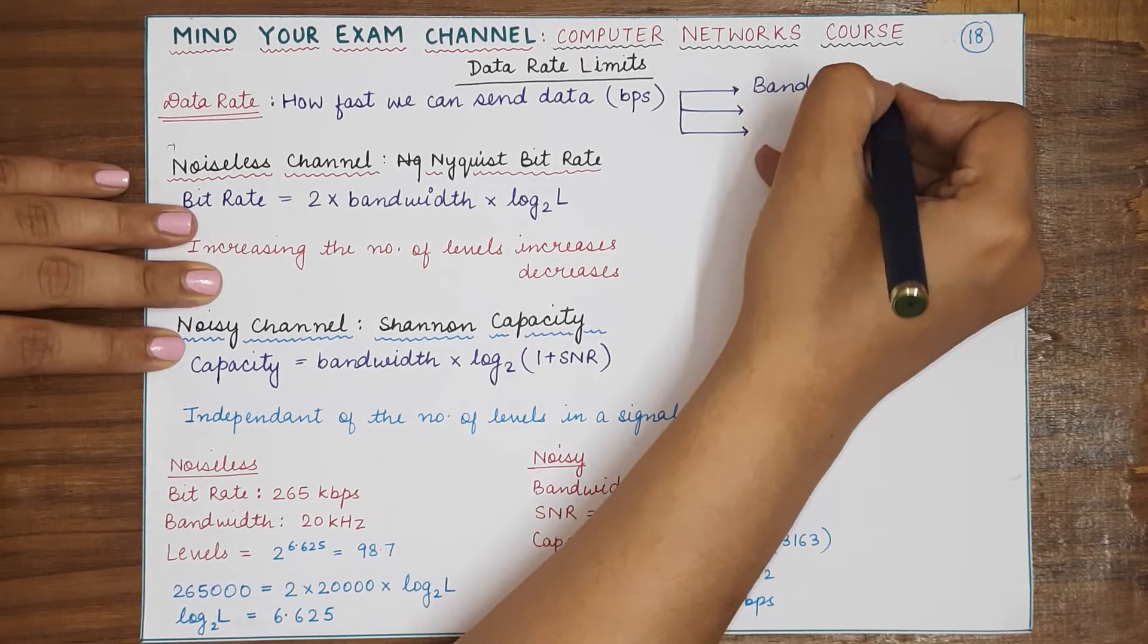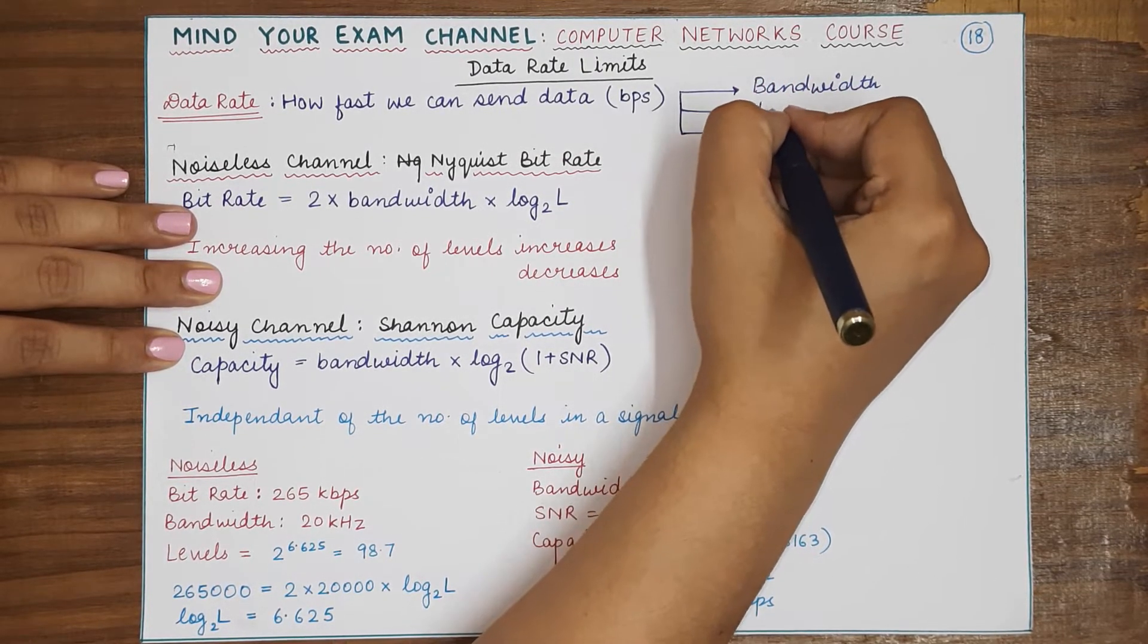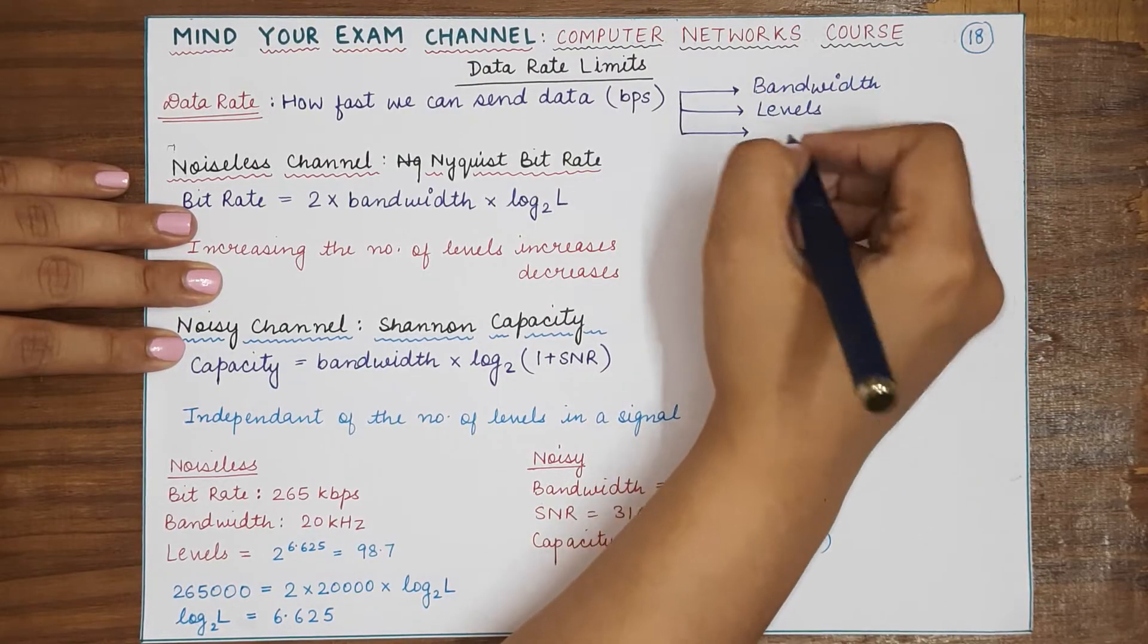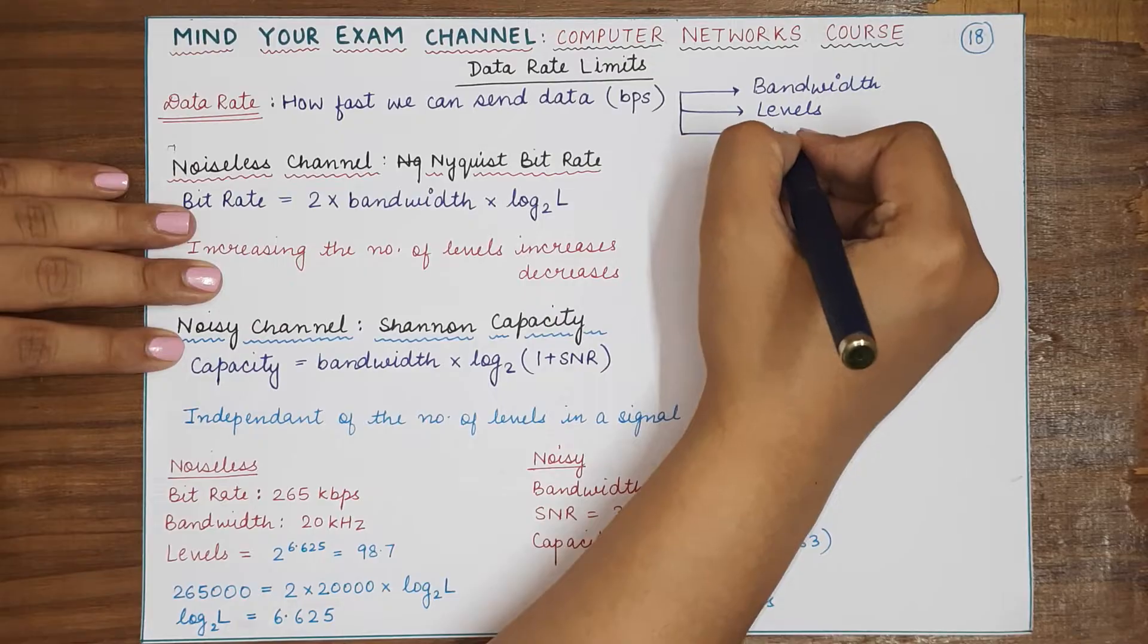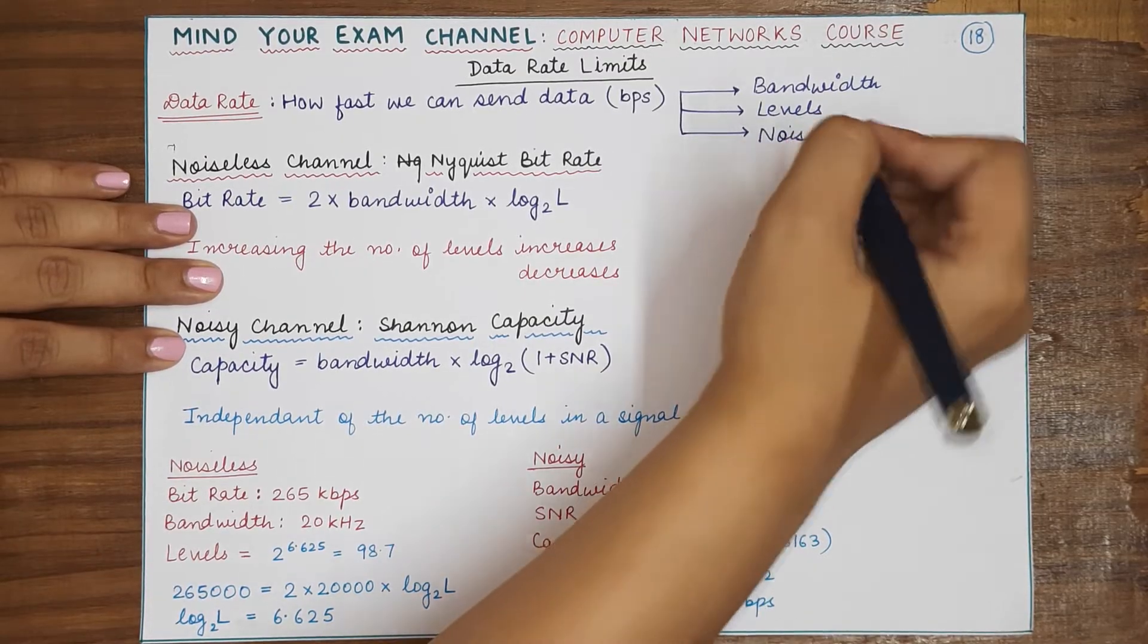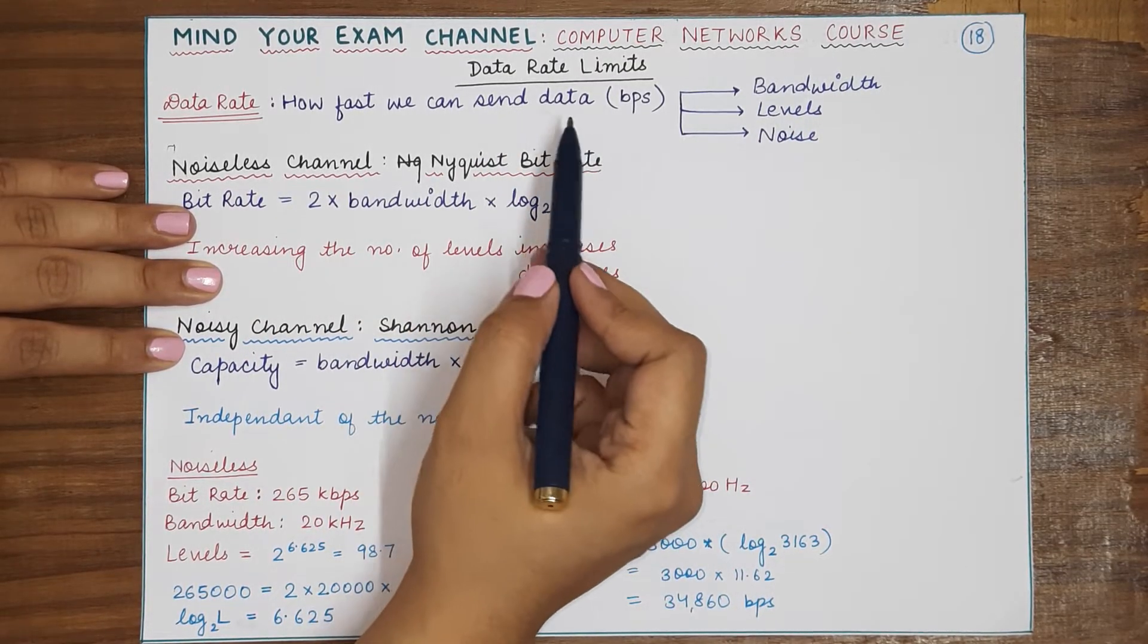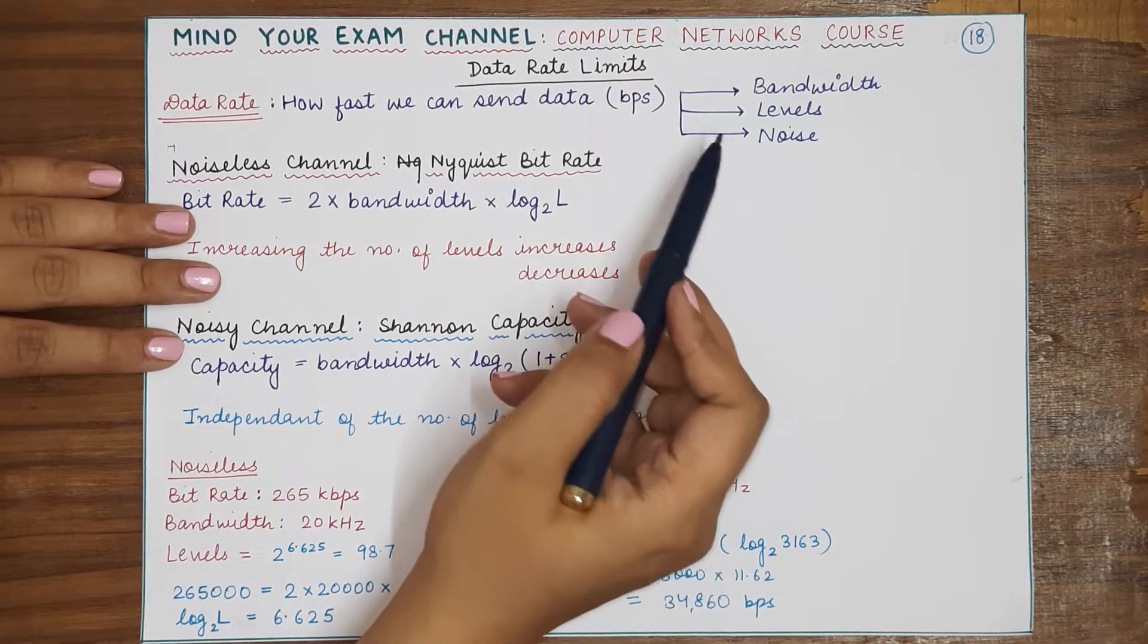Then is the number of levels that are present in the signal, and third is the signal to noise ratio, or the amount of noise that is present in the channel that is used for transmission.